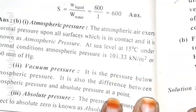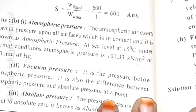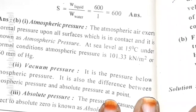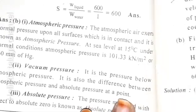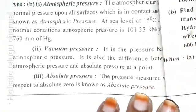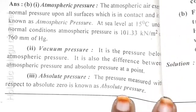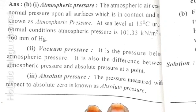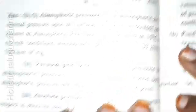Atmospheric pressure: the atmospheric air exerts normal pressure upon all surfaces which it is in contact with and it is known as atmospheric pressure. At sea level at 15 degrees centigrade under normal conditions, atmospheric pressure is 101.33 kN per m² or 760 mm of Hg. Vacuum pressure is the pressure below atmospheric pressure. It is also the difference between the atmospheric pressure and absolute pressure at a point. Absolute pressure is the pressure measured with respect to absolute zero.